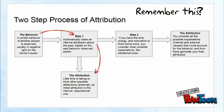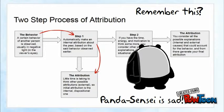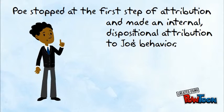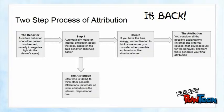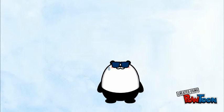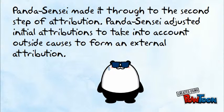Remember this? This is the two-step process of attribution. Step one is specifically regarding making an internal attribution about the person based on the observations that were made. Poe stopped at the first step of attribution and made an internal, dispositional attribution to Joe's behavior. Looking back at the two-step process of attribution model, one can go on to step two if he or she has the time, energy, and motivation to think more and consider other explanations. One can therefore consider both internal and external attributions to account for the behavior. Panda Sensei made it through to the second step of attribution, adjusting initial attributions to take into account outside causes and form an external attribution.